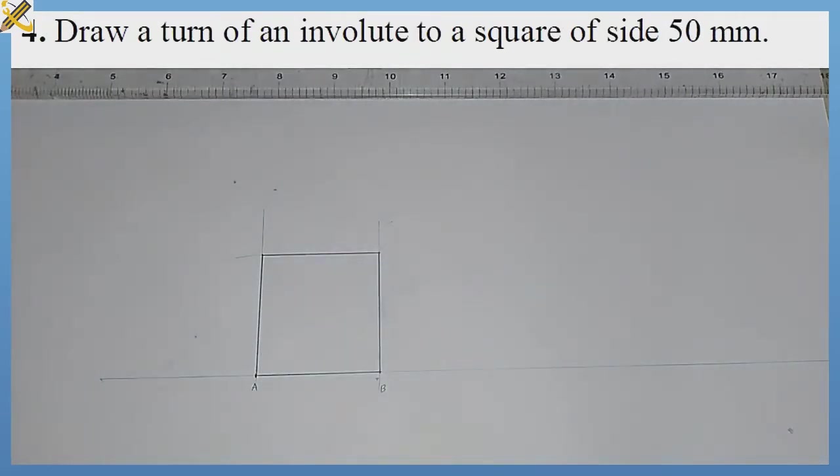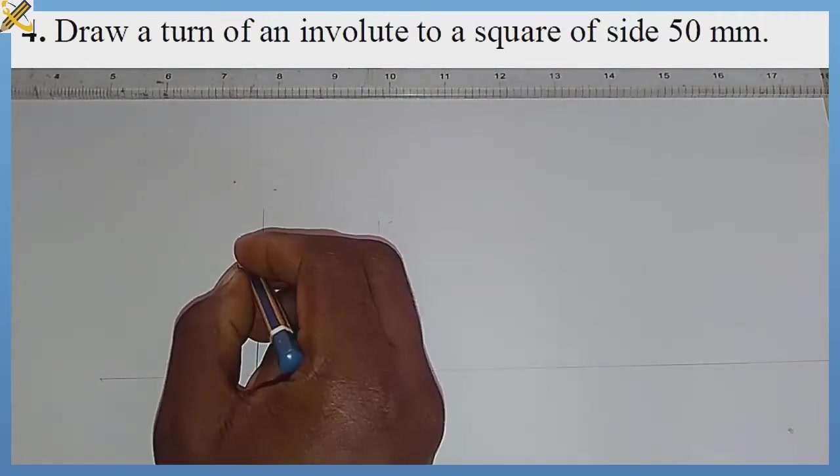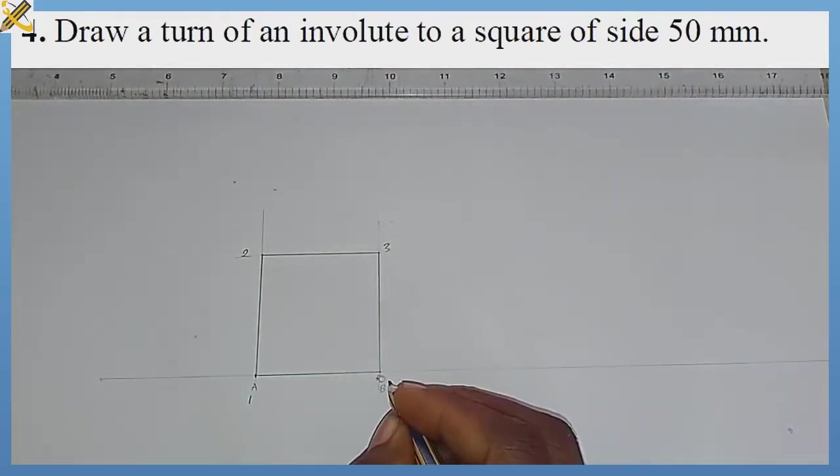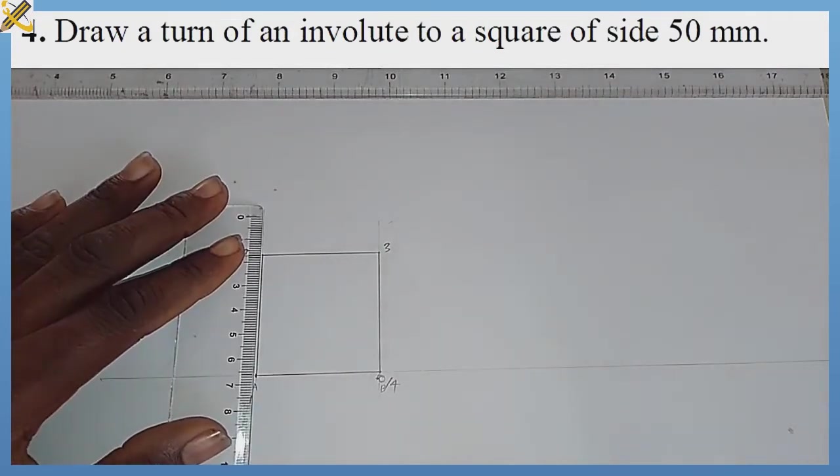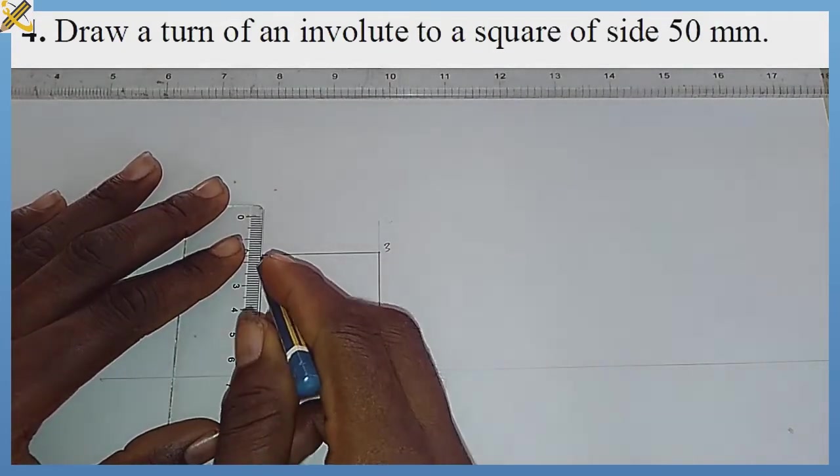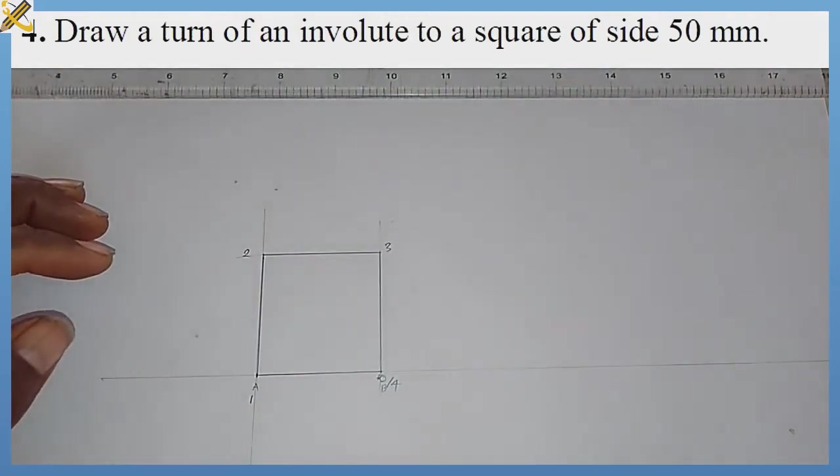The next procedure is to label this mark as Mark 0, 1, 2, 3, then 0 over 4. For Mark 1, I'm going to pick my ruler and project this line vertically downward.